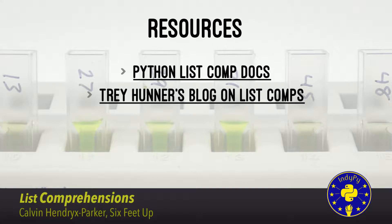If you have further questions, the Python list comprehension documentation is really good — I've linked to it from this slide. Trey Hunter, who you may know from Django conferences, has a really good blog post that visually covers what I showed during this talk. A lot of what I showed was inspired by his blog post. This slide deck is already up on GitHub in the IndiePie GitHub org under IndiePie presentations as a subfolder. Happy to answer any questions.